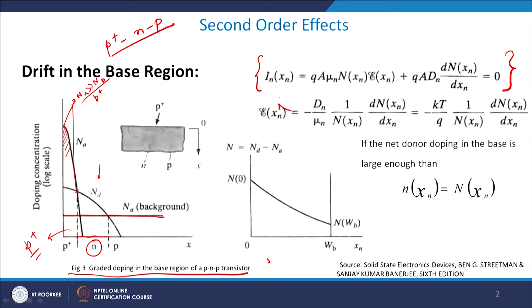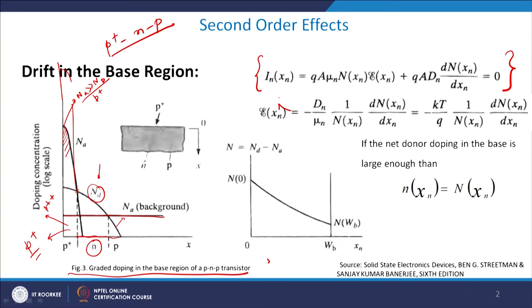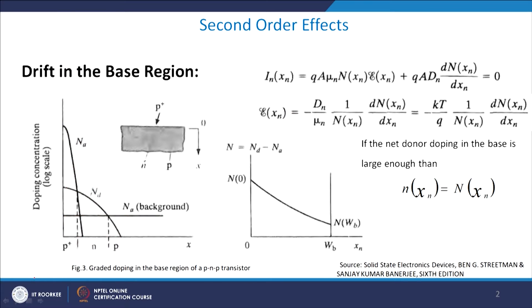On the collector side, the acceptor ion concentration NA is larger than ND, making it P-type. Since NA is much larger than ND in the emitter region, we refer to it as P+. On the other side, the donor ion ND reduces below the acceptor concentration, making it P-type again. This is known as a graded junction doping or graded doping profile, which allows control of the width of the base, emitter, and collector simply by changing the doping profile.